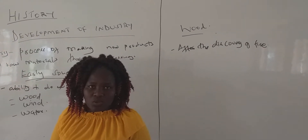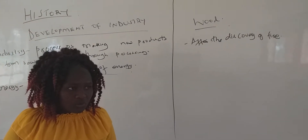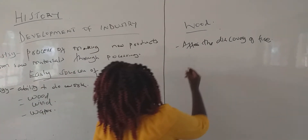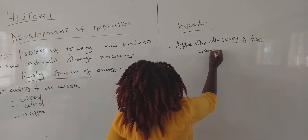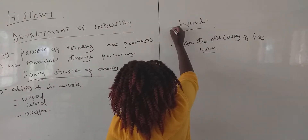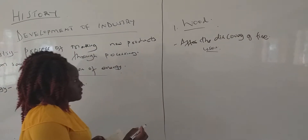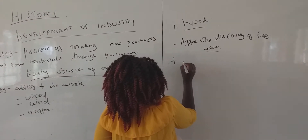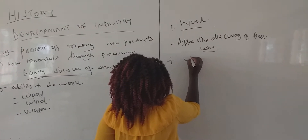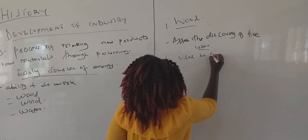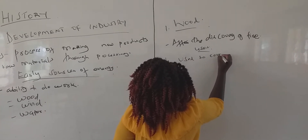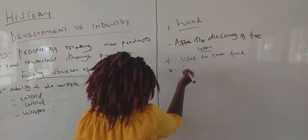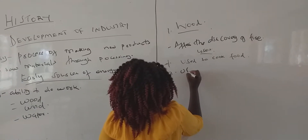Let's look at the uses of wood as an early source of energy. Use number one: it was used to cook food. It was also used to protect humankind from wild animals.